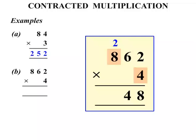4 times 8 is 32 plus 2 is 34. And since there's no other calculation let's write the 34 down now. So the answer there 3448.